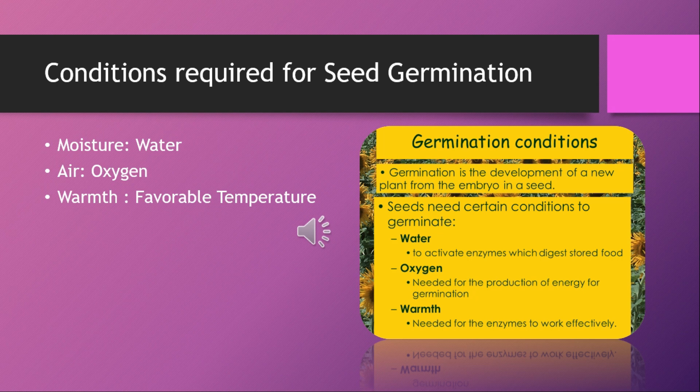The second condition is air. During seed germination, energy is needed for growth and cell division. This energy is released by the oxidation of food, which in turn requires oxygen. The third condition is warmth, or favorable temperature. Some seeds do not germinate in summer; similarly, seeds of summer flowers fall off and germinate in winter, meaning different varieties need a specific favorable temperature to germinate.